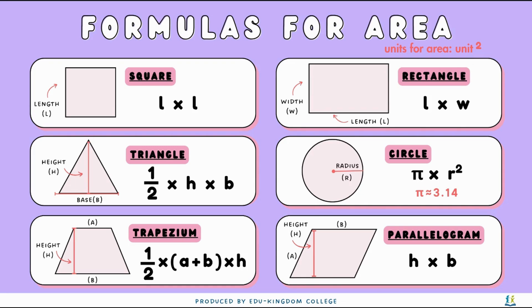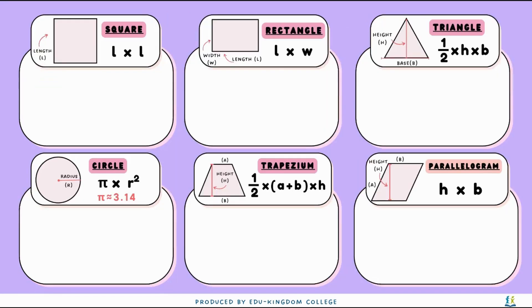For a trapezium, we do a half times a and b added together, times by the height. And for a parallelogram, it's the same as the rectangle, which is height times the base.